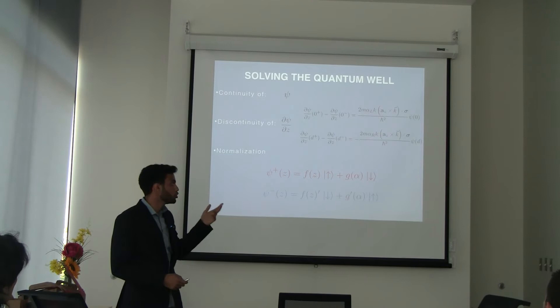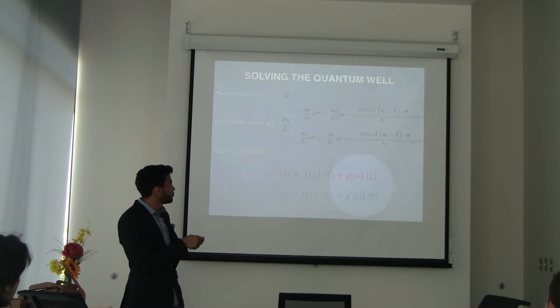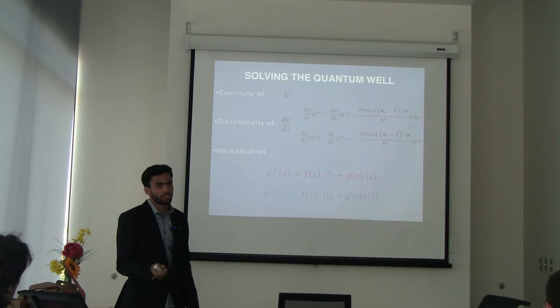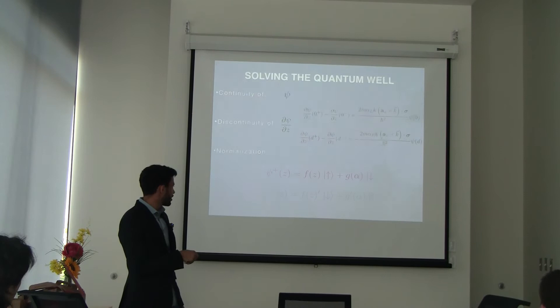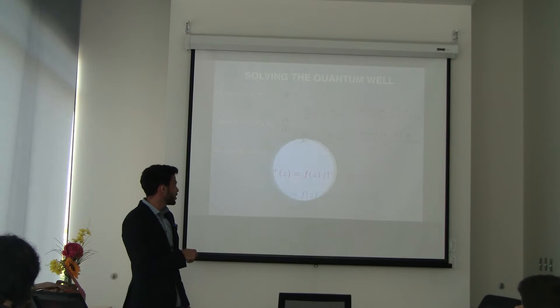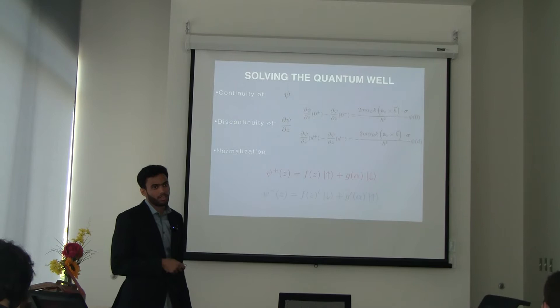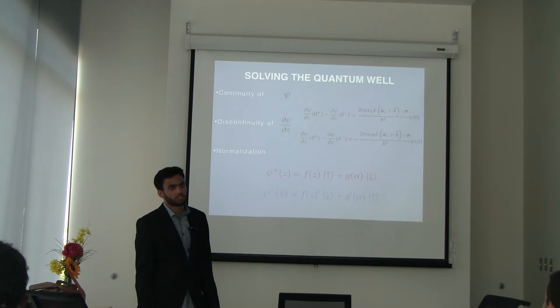That's the spin-orbit coupling parameter — it relates to the material property, specifically how strong the coupling is. If the spin-orbit coupling is really small, the plus spin state is essentially just the up state. It's like a perturbation: you start with spin-up, then turn on the spin-orbit coupling and get a little bit of spin-down mixed in.